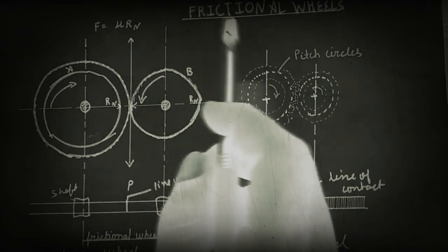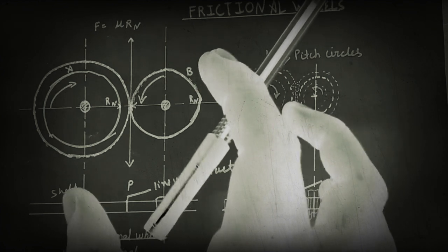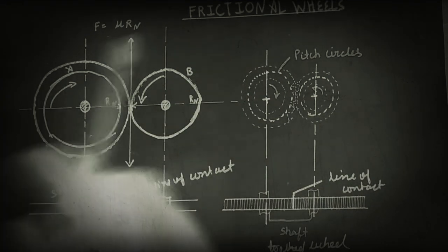Frictional wheels are used to transmit motion and power by gear or kinematic pairing to be transmitted by the frictional wheel.